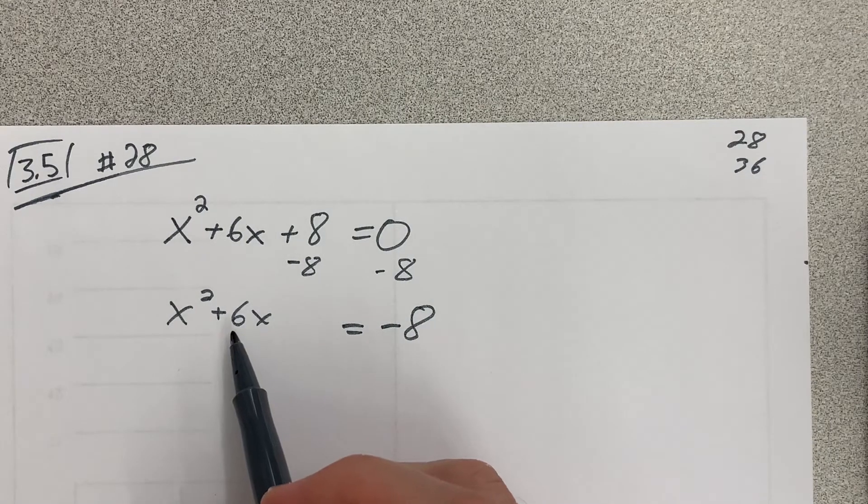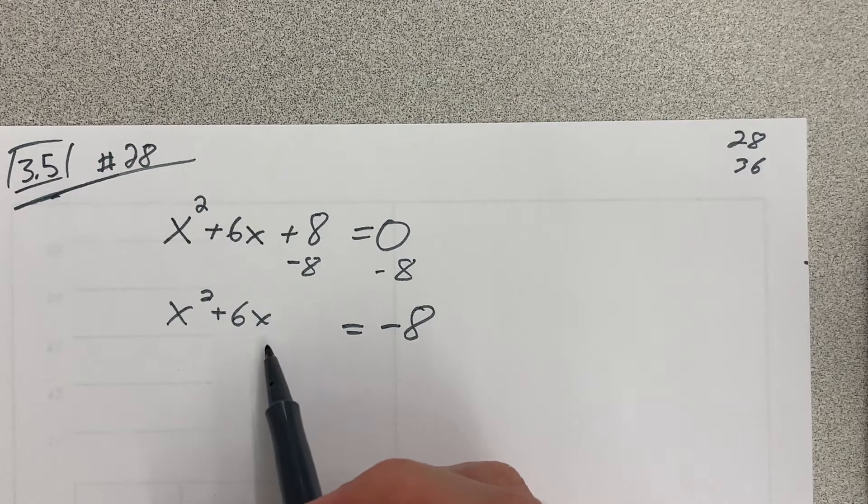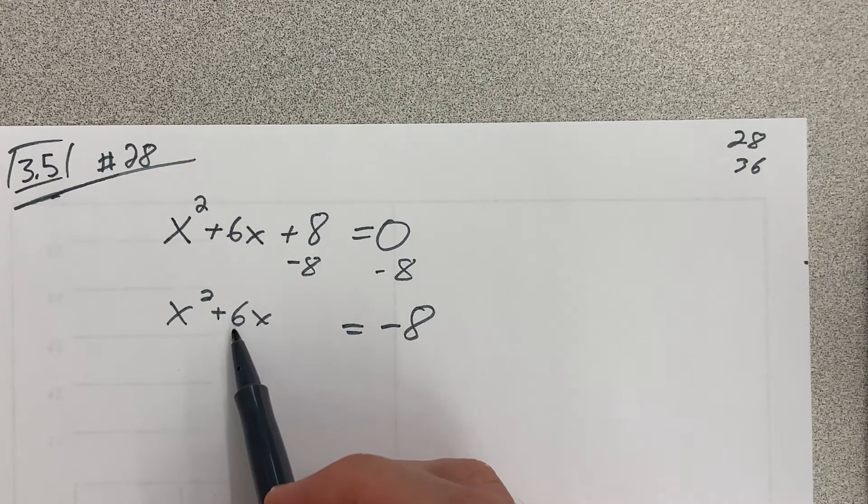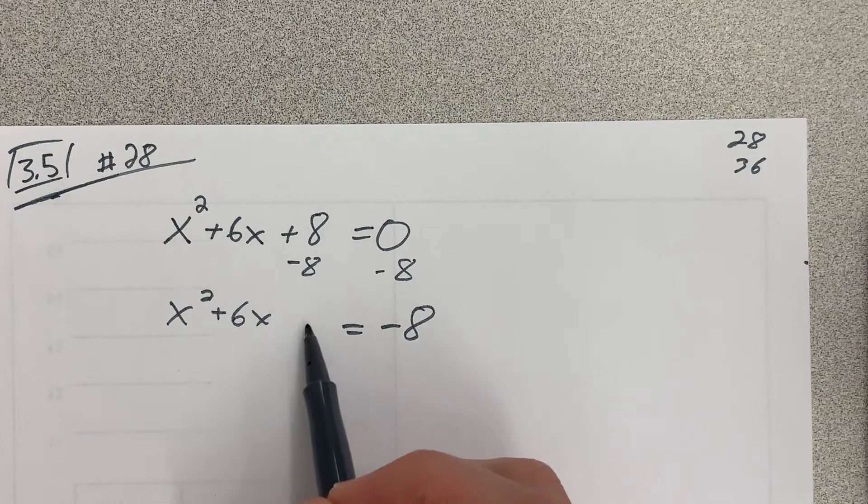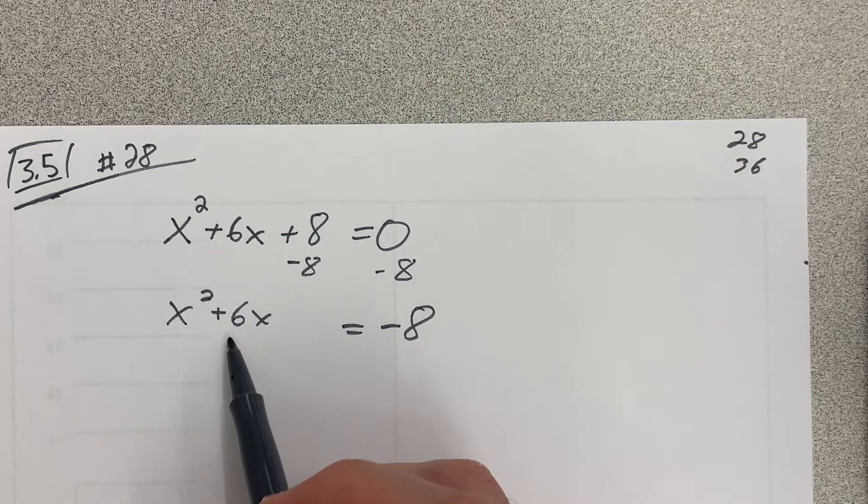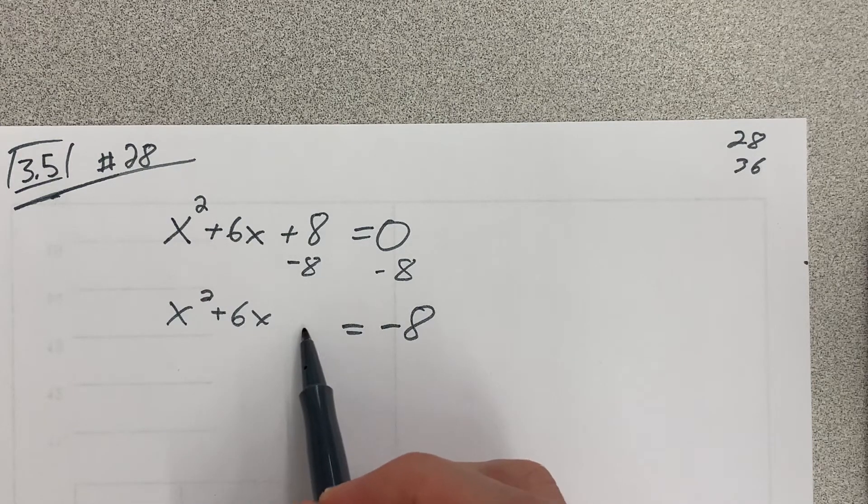And then there's two ways that you can approach this. One way is just to kind of intuit what it must be. So like, you look at 6 and you know that it's got to be 2 times whatever is squared over here. So you might be like, oh, well, that would be 3. So this has got to be 3 squared, so it must be 9.